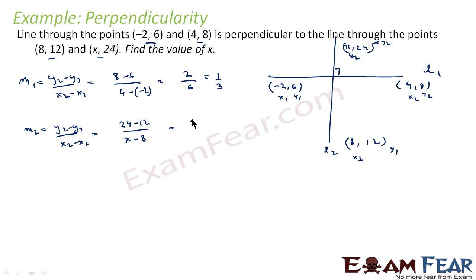Now we know that for lines to be perpendicular, M1 into M2 should be equal to minus 1. So (1/3) into (12/(x minus 8)) equals minus 1. 3, 12 cancel. So what we get is x minus 8 equals minus 4, or we get x equals 8 minus 4 equals 4. So the value of x is 4.